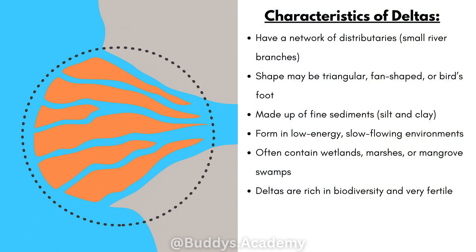So what are some characteristics of deltas? Deltas have a network of distributories — small river branches. Their shape may be triangular, fan-shaped or a bird's foot. They are made up of fine sediments, things like silt and clay, and they form in low energy, slow flowing environments. Deltas often contain wetlands, marshes or mangrove swamps, and they are rich in biodiversity and can be very fertile.